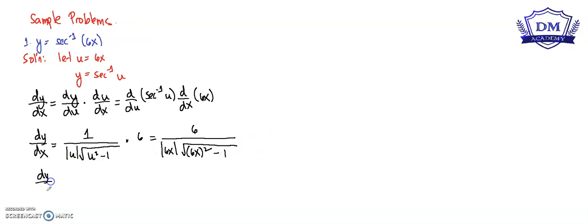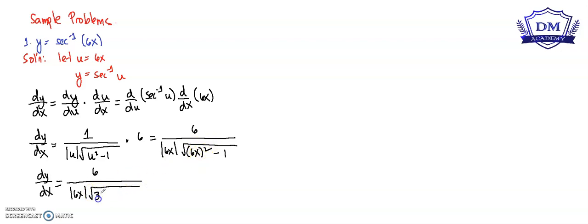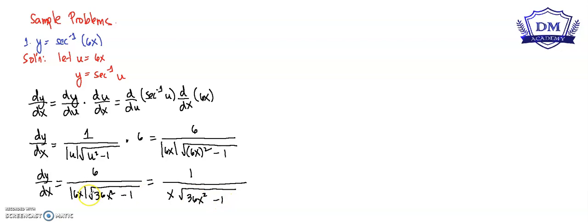Simplifying this, we can cancel out the 6 in the numerator with the 6 in the absolute value of 6x, giving us 1 all over x times the square root of 36x squared minus 1. So this is our dy over dx.